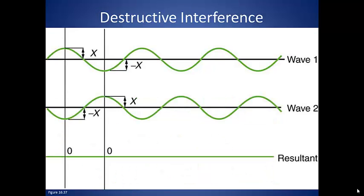Destructive interference occurs when the crest of wave 1 meets the trough of wave 2. When you add the amplitudes of those points, the resultant wave flattens out.